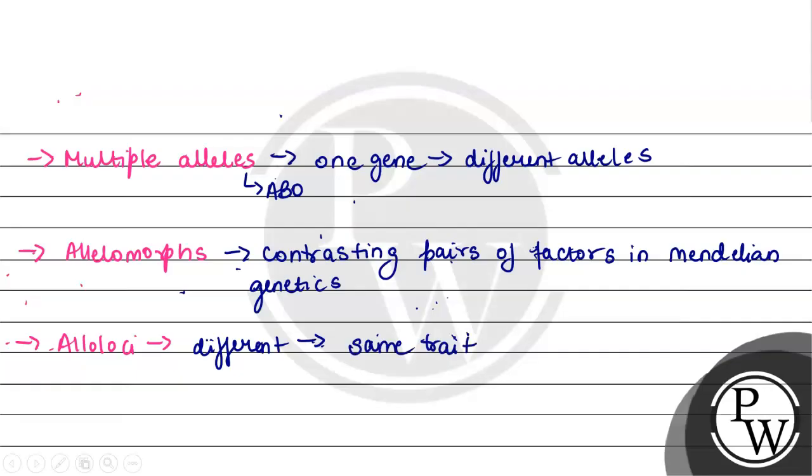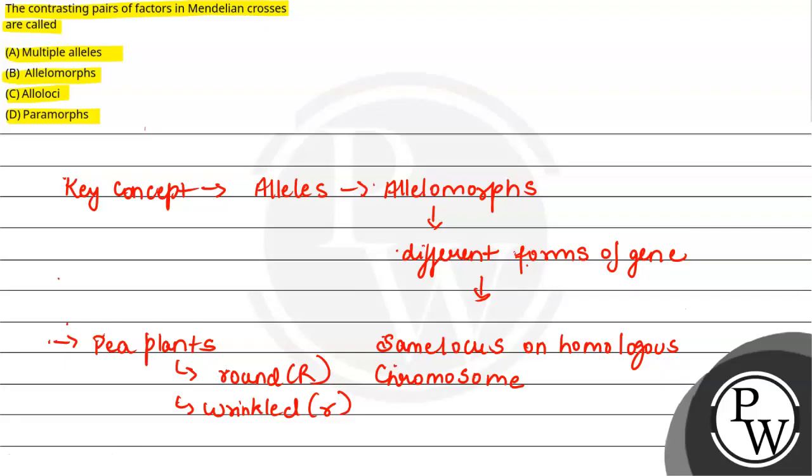Option D, paramorphs: paramorphs are a category where we have different forms of the same species. This is generally not used in alleles.